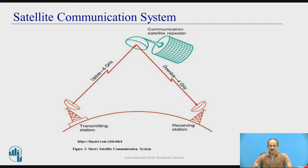The transmitting earth station sends signals to the satellite through the uplink. That means the process of transmitting signals from the earth station to the satellite is called uplink. The signal received at the satellite is processed — noise is removed, the signal is amplified — and retransmitted to the receiving earth station through the downlink. The process of transmitting from the satellite to the receiving earth station is called the downlink.